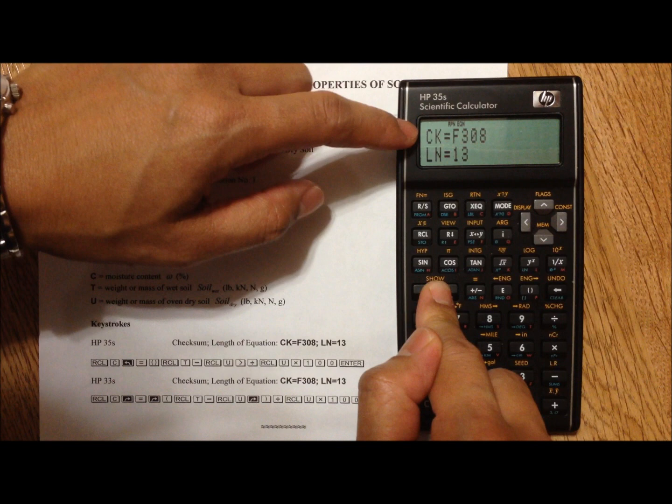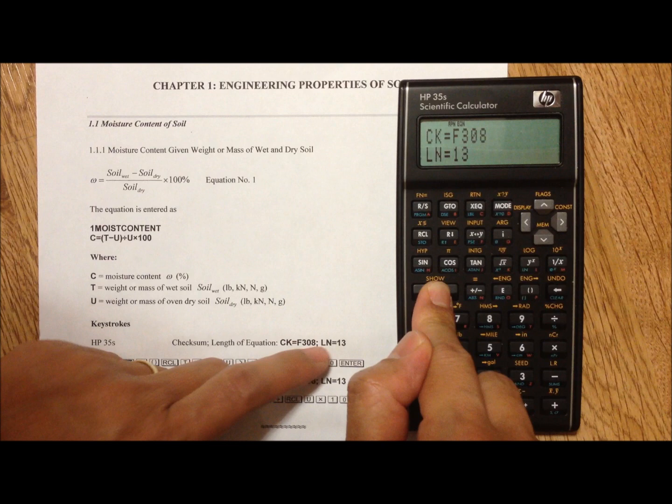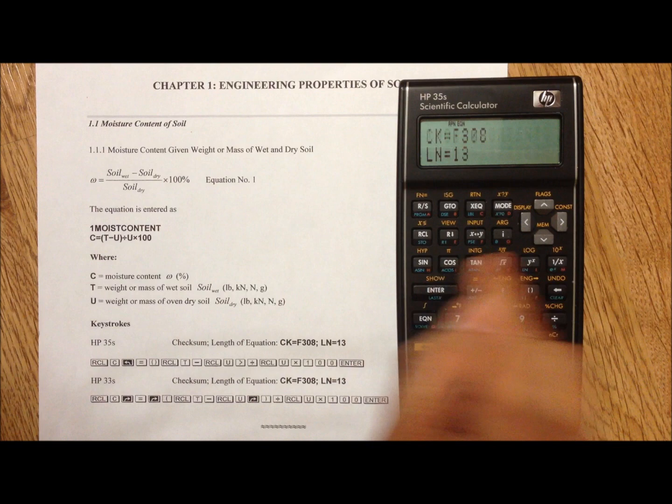As you can see, the CK or checksum is F308 and LN or length of equation is 13. It's exactly the same as this, which means I entered the equation correctly.